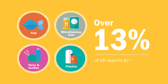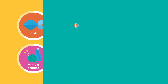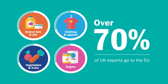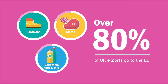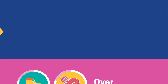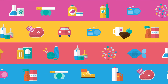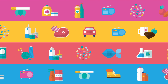For these products, over 60% of UK exports go to the EU. For these products, over 70% of UK exports go to the EU. That's a lot of potential trade affected. So if the UK needs to find other partners to trade these products with, where should it look?